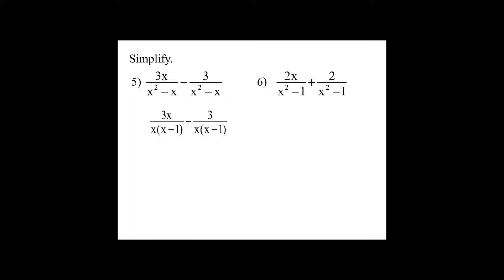Factor your denominators. Combine your numerators. Factor the numerator and then cancel out. We're left with 3 over x.